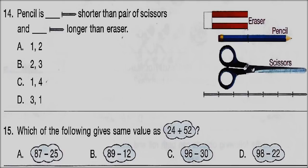Question 15: Which of the following gives the same value as 24 plus 52? Solve this equation first, then solve the equations given in options A, B, C, and D, and choose the option which gives the same value as 24 plus 52.